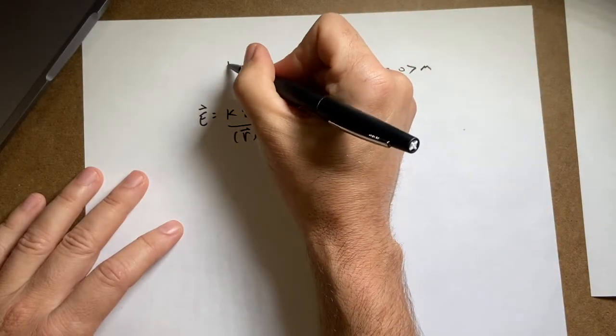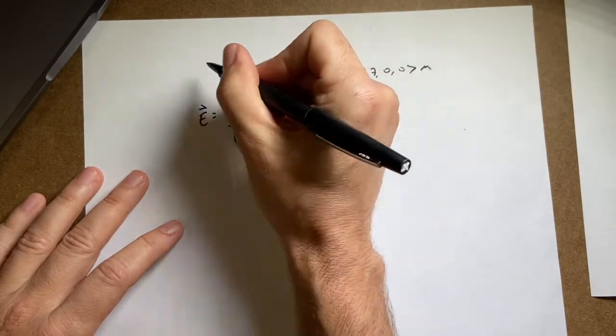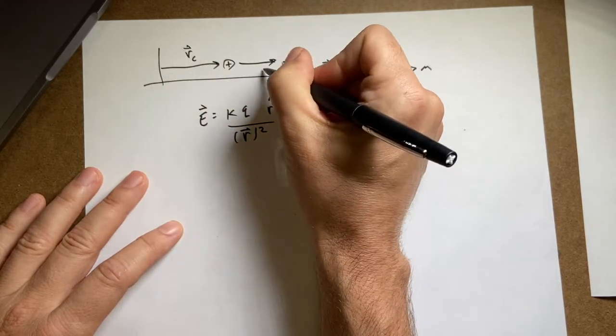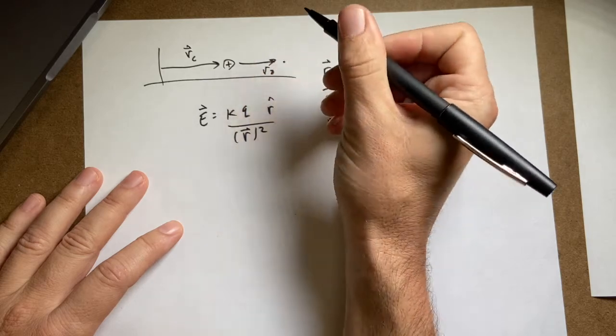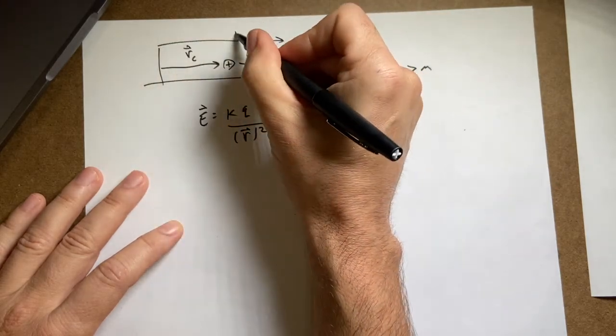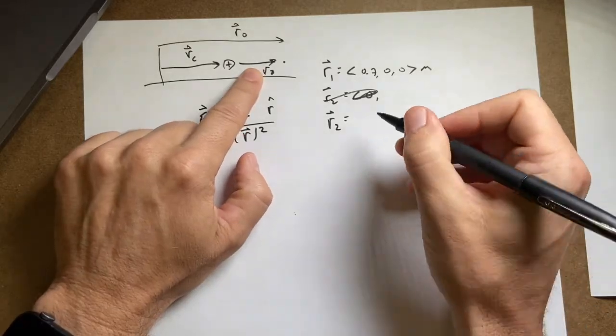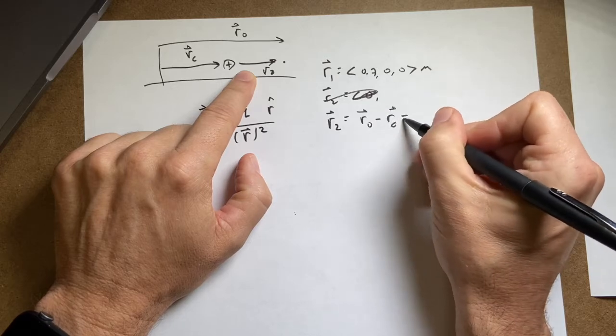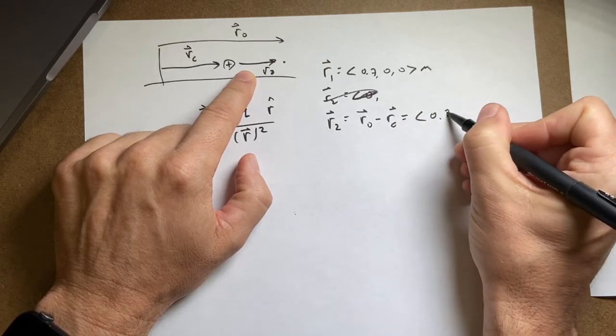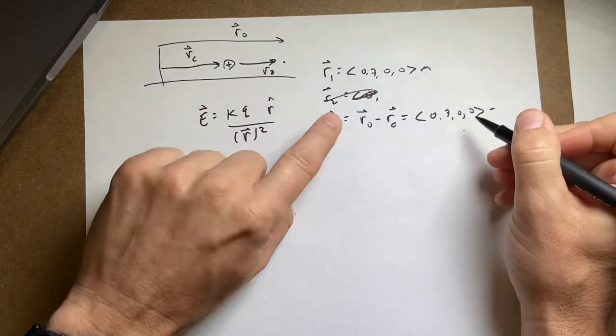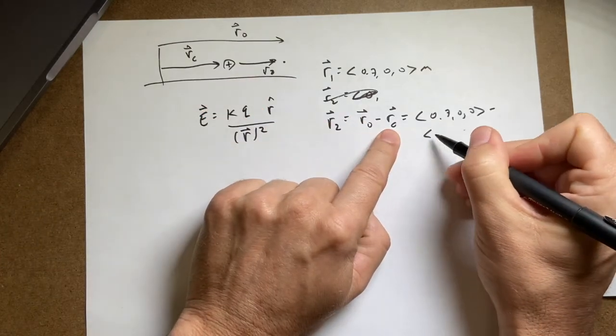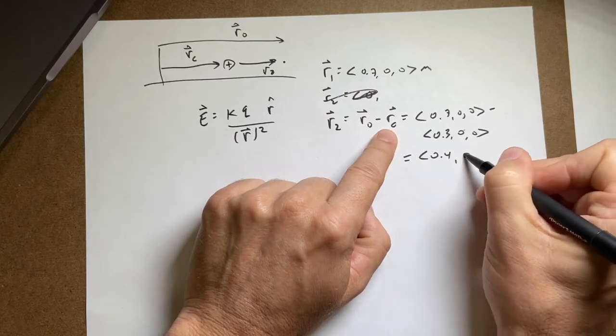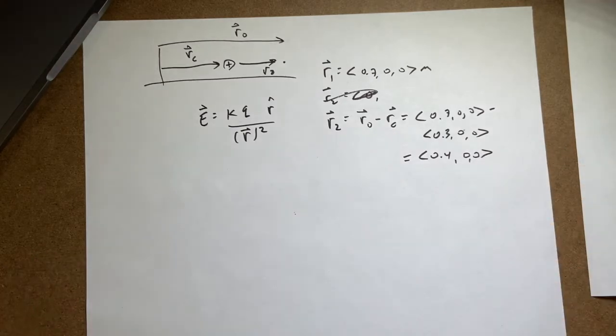So let's just draw this right here. So here's my charge, and here's my location. So this is R charge, and this is R2, and this is RO, the observation location. So that R2 is actually going to be R observation minus R charge. So that's going to be equal to 0.700 minus the location of the charge, which is 0.300. And I get 0.400.